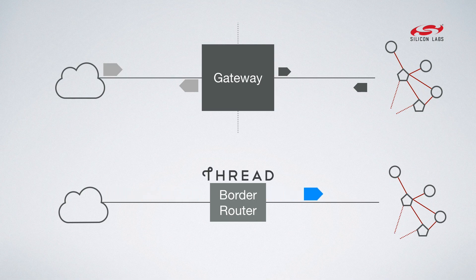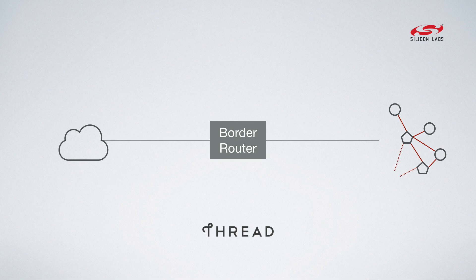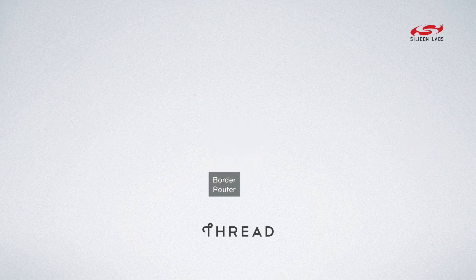In order to talk to external devices, you need to have border routers. These are just Thread devices that have another interface, such as Wi-Fi or Ethernet, with which they can reach the cloud. When talking to external devices via the Wi-Fi or Ethernet, the Thread devices look exactly like any internet device today.